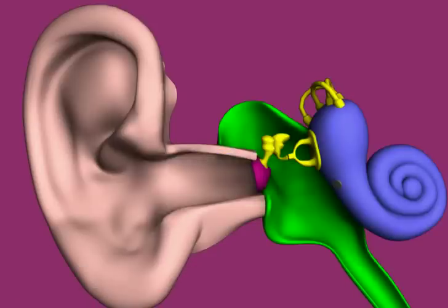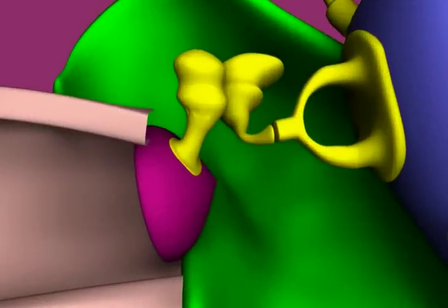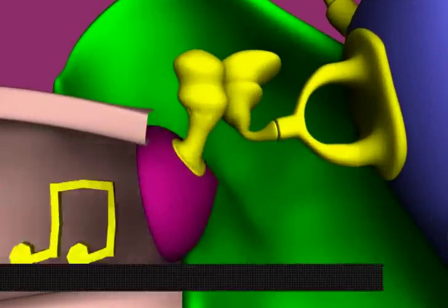At the end of the external auditory canal, there is a thin, tightly stretched membrane. This is called the eardrum.